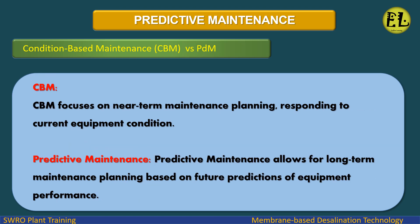Condition-based maintenance (CBM) versus predictive maintenance: CBM focuses on near-term maintenance planning, responding to the current equipment condition. Predictive maintenance, on the other hand, allows for long-term maintenance planning based on future predictions of equipment performance.